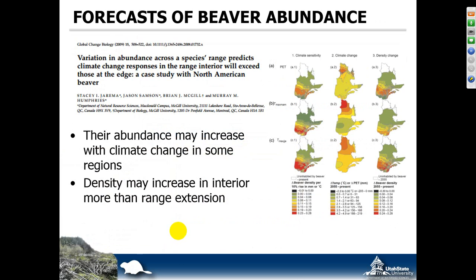There's some interesting work done a few years back by Jarema and others, looking at forecasting beaver abundance up in Quebec and how their abundance might change with predicted climate change. They're suggesting we may see an increase in the abundance of beaver. A lot of climate change impact work looks at how different biota may respond, often resulting in big shifts in the range map. They argue there might be minor shifts in the range map, but that beaver have such an extensive range — they're already kind of at the edge — so we're going to see density increases in the interior, which depending on perspective could be quite a good thing.